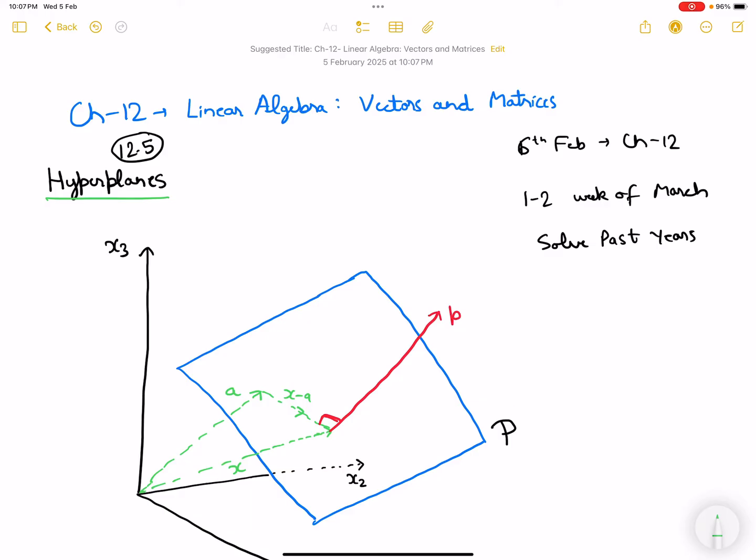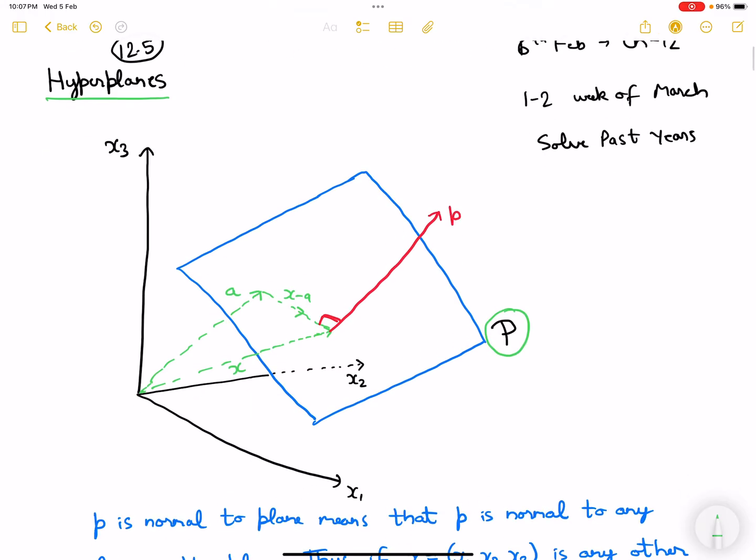Suppose P is a plane in R³, so R³ is three dimensional with coordinates x1, x2, x3. Suppose P is a plane which is passing through the vector a, and this vector small p is its normal.